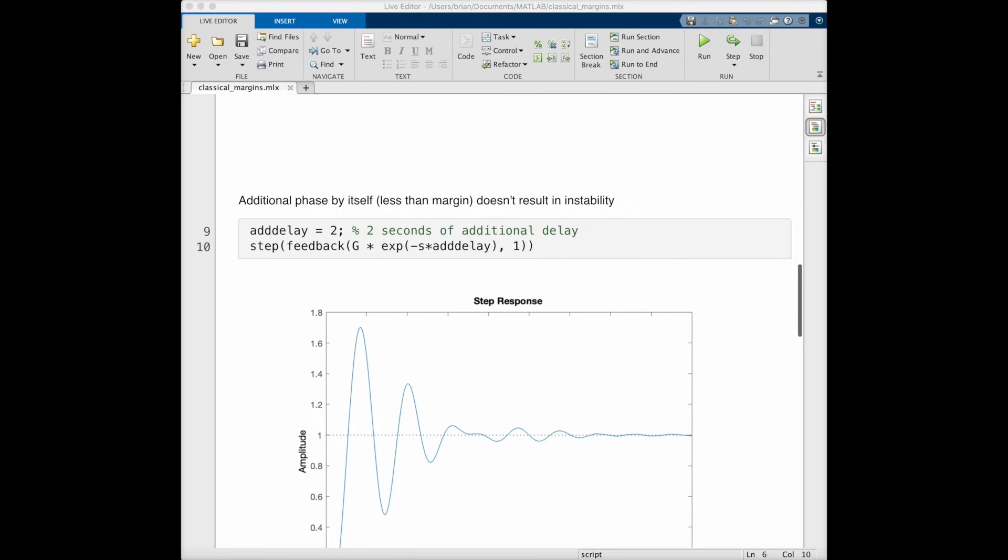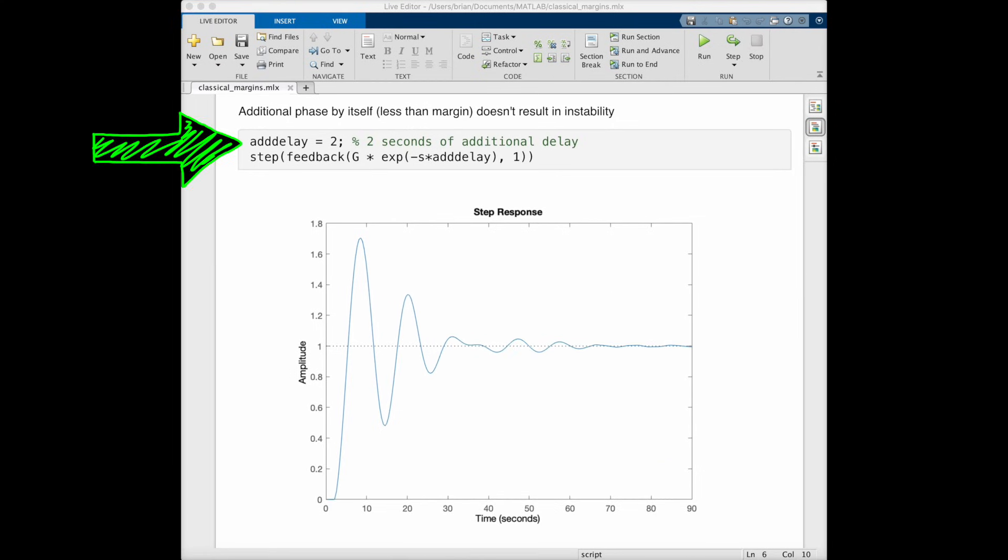Now we can also add phase by itself by adding a delay to the open loop system. Here, I've chosen a delay of 2 seconds, and this eats up about 2 thirds of the total phase margin. And as you can see with the step response, this closed loop system is also stable. So a gain increase of 15 decibels by itself, or an added delay of 2 seconds by itself, are both stable variations.